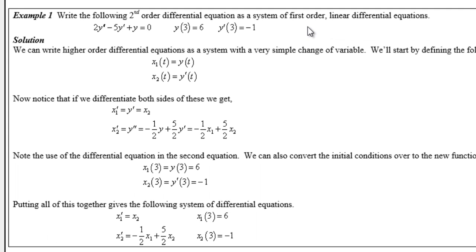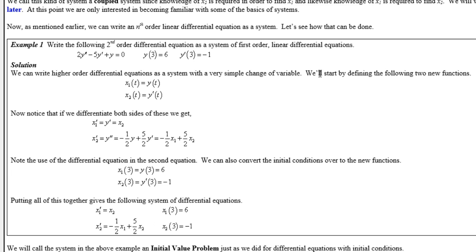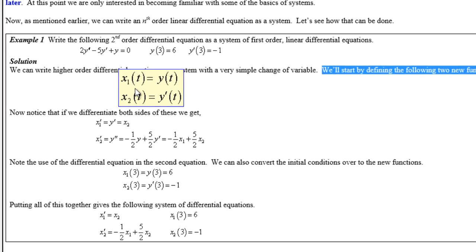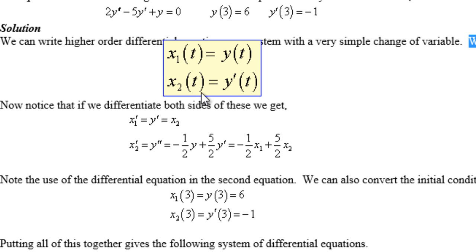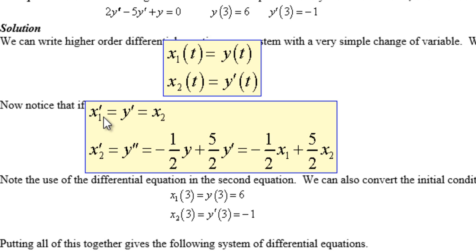To convert this into a system of first order differential equations, we define two new functions: x1(t) = y(t) and x2(t) = y'(t). Differentiating both with respect to t gives x1' = y', which equals x2, since we defined x2 = y'. So we get x1' = x2.